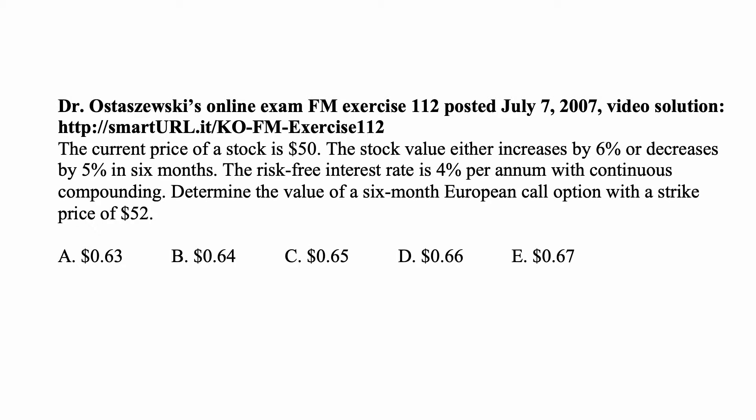The current price of a stock is $50. The stock value either increases by 6% or decreases by 5% in six months. The risk-free interest rate is 4% per annum with continuous compounding. Determine the value of a six-month European call option with a strike price of 52.